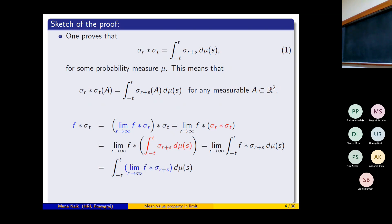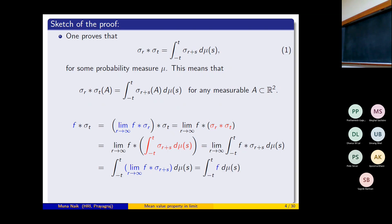Using the hypothesis that the limit as r → ∞ of f * σ_r converges to f uniformly, one can apply the Dominated Convergence Theorem and push the limit inside. This gives the integral from -t to t of f dμ(s). Since μ is a probability measure, this equals f. Therefore, f * σ_t = f for all t > 0, which means f is harmonic.